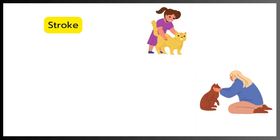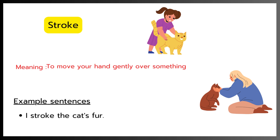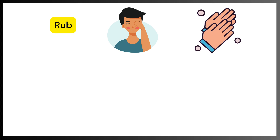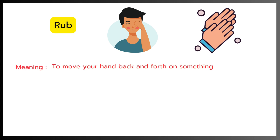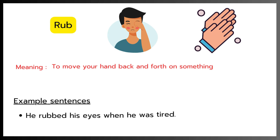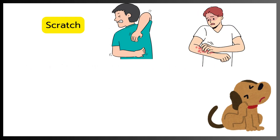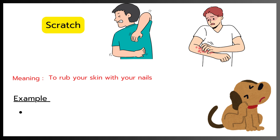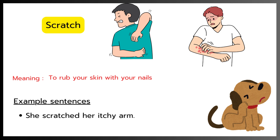Stroke. Meaning: To move your hand gently over something. Example: I stroke the cat's fur. Rub. Meaning: To move your hand back and forth on something. Example: He rubbed his eyes when he was tired. Scratch. Meaning: To rub your skin with your nails. Example: She scratched her itchy arm.